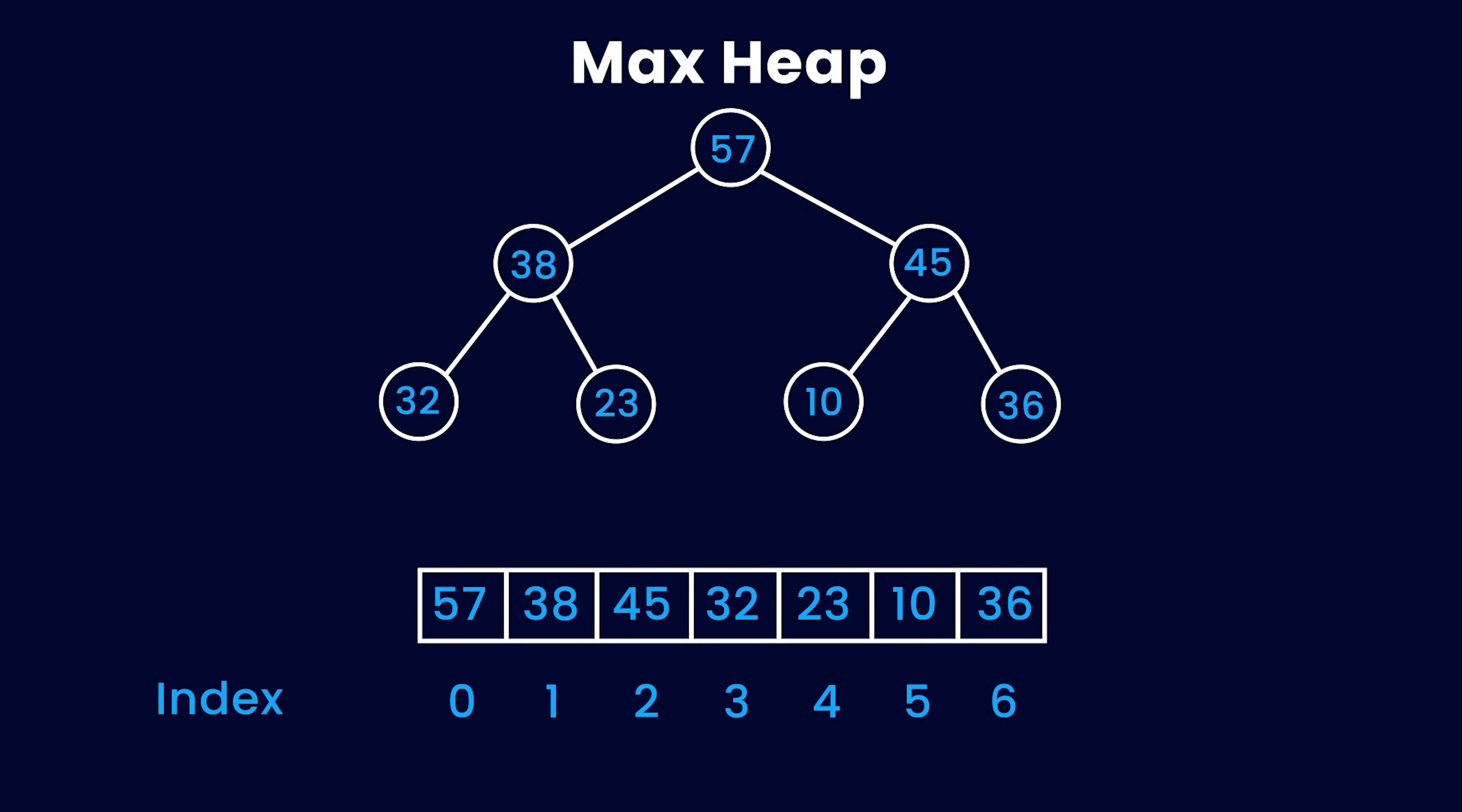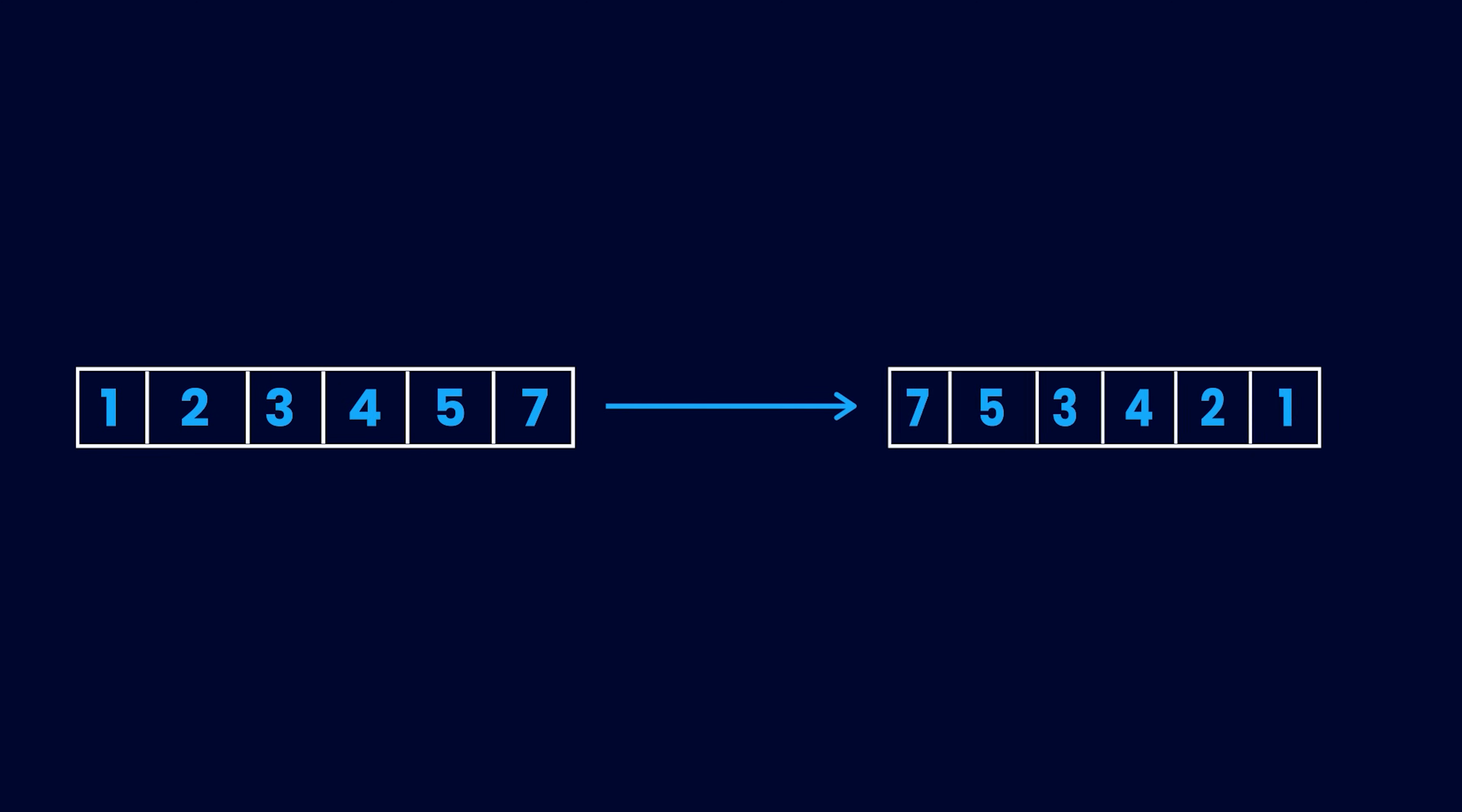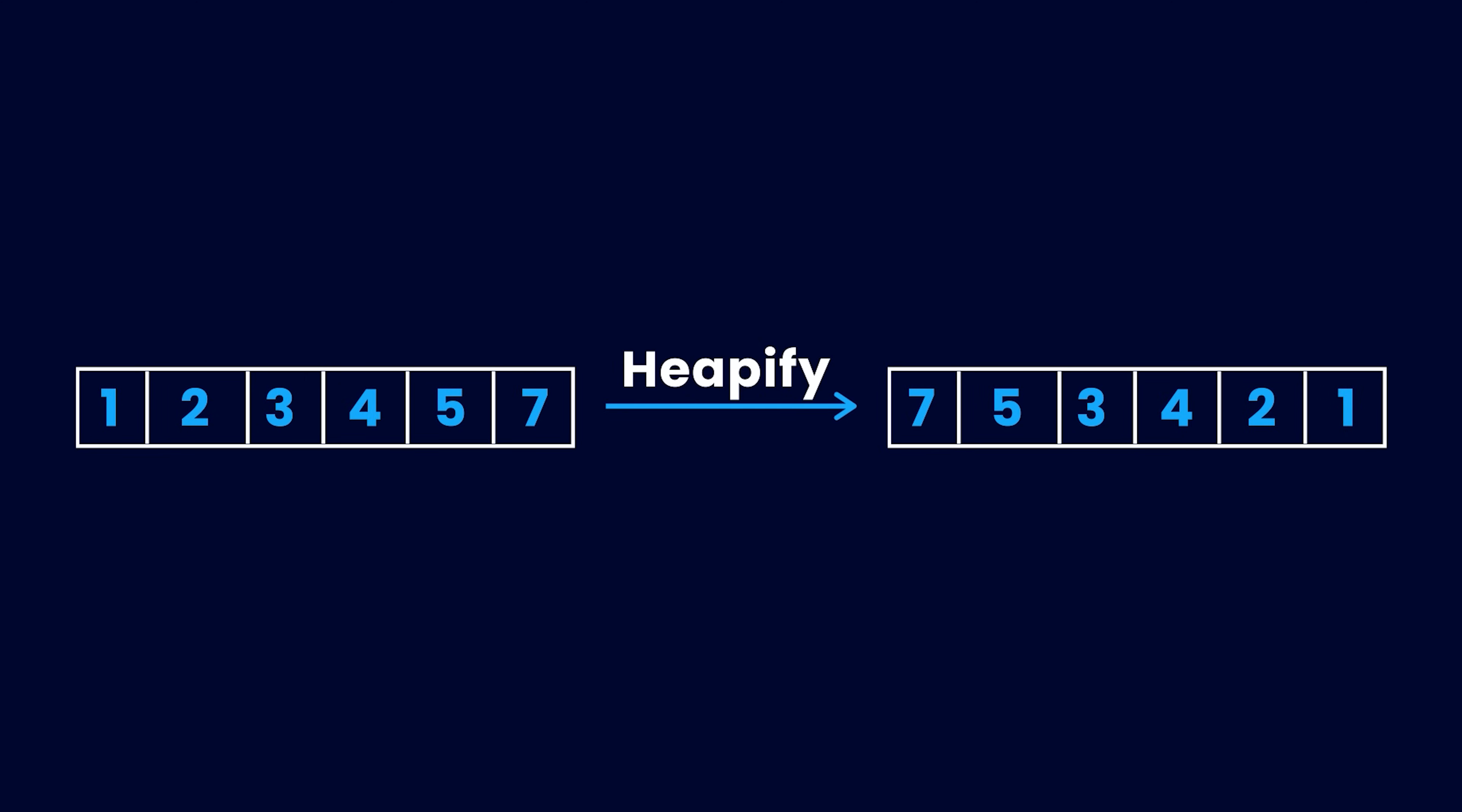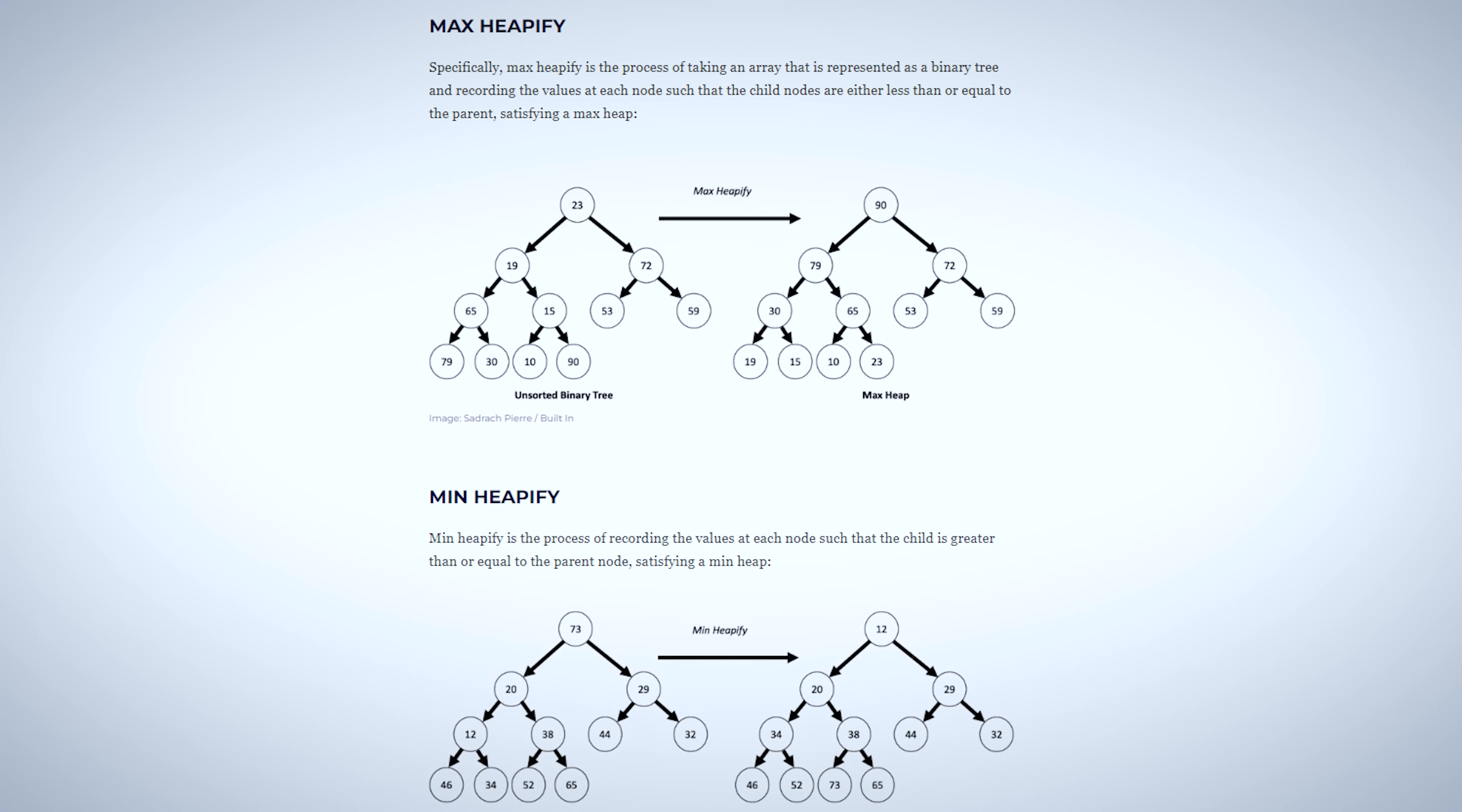For an element at index n, its children can be found at index 2n plus 1 and 2n plus 2. Any array can be converted into a heap using an algorithm called heapify. I will not go into the details of heapify, but I just want to make sure that you know all the important concepts for every data structure that we will discuss today.